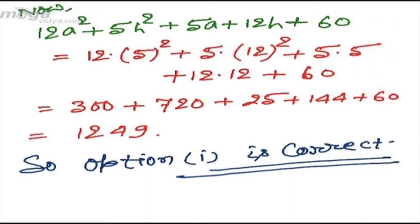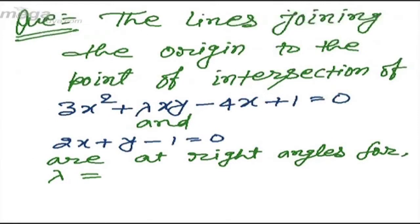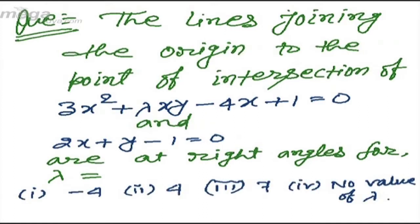Now I am taking another question: the lines joining the origin to the point of intersection of 3x² + λxy - 4x + 1 = 0 and 2x + y - 1 = 0 are at right angles for λ equal to — options: -4, 4, 7, or no value of λ.